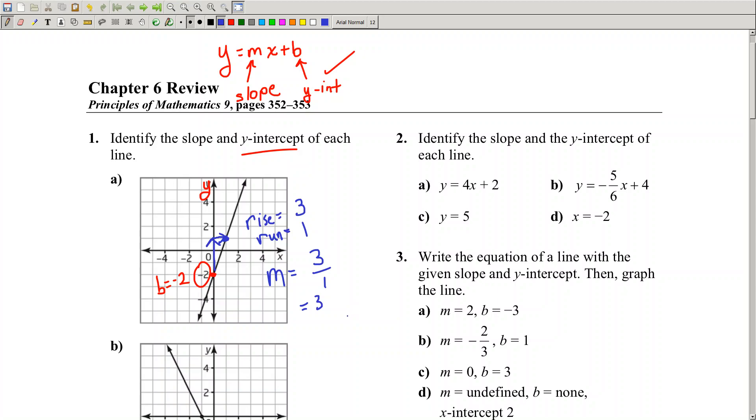My slope is rise over run, so the slope is 3. The equation would be y = 3x - 2. That's it, easy.